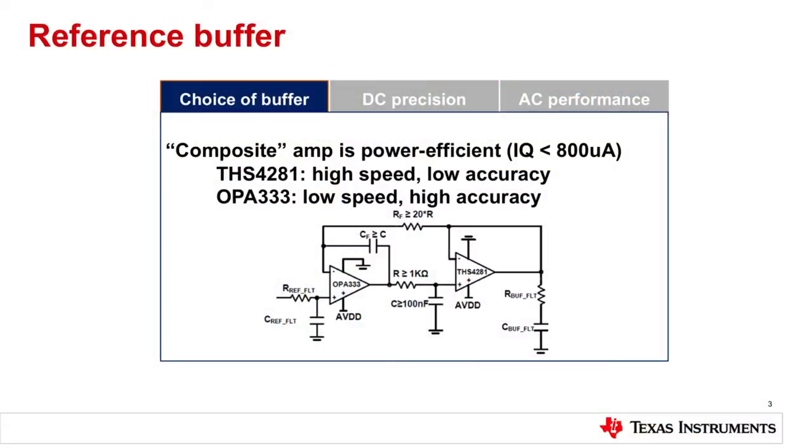Because the THS4281 is inserted into the global feedback loop of the OPA333, the OPA333 corrects the DC errors of the THS4281. You get the AC performance from the high-speed THS4281 on one hand, and the DC precision — namely the VOS and drift — of the OPA333 on the other hand, along with low power. Combined, this gives you well below 800 microamps of power consumption.